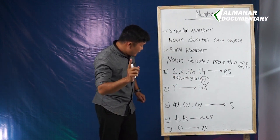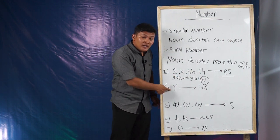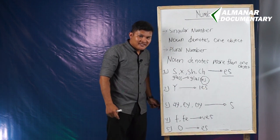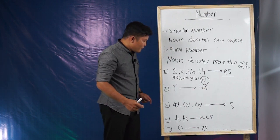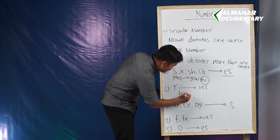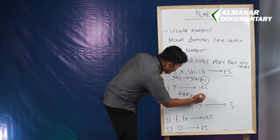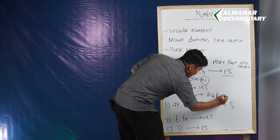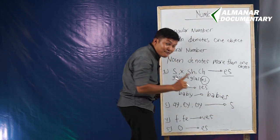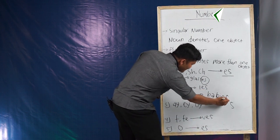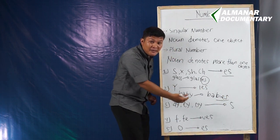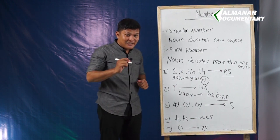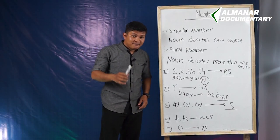If the singular ends in Y, you just need to change it to IES. For example, 'baby' becomes 'babies', 'duty' becomes 'duties', and so on.